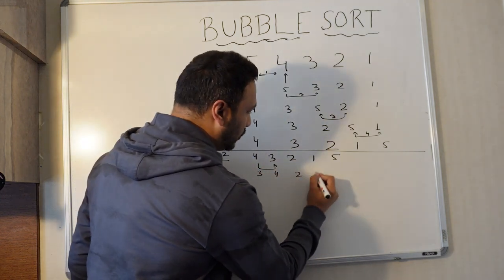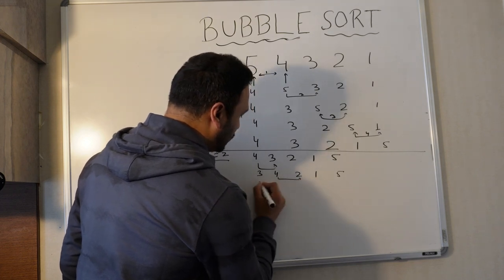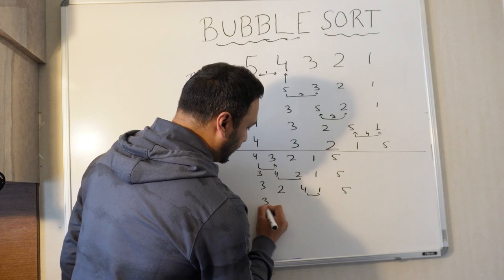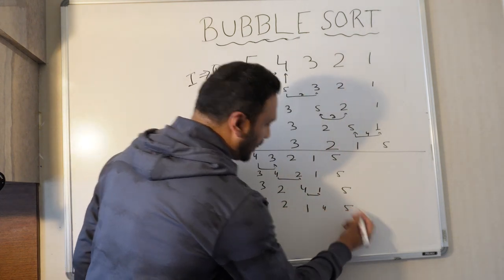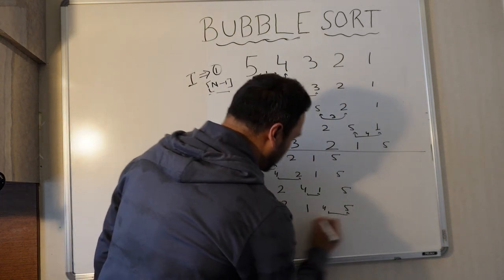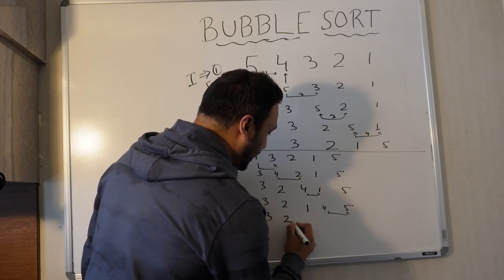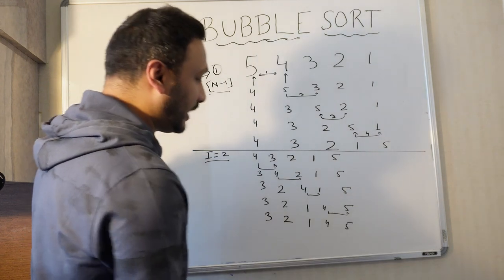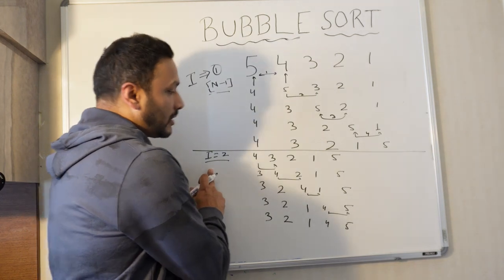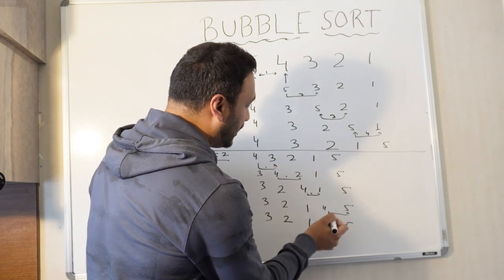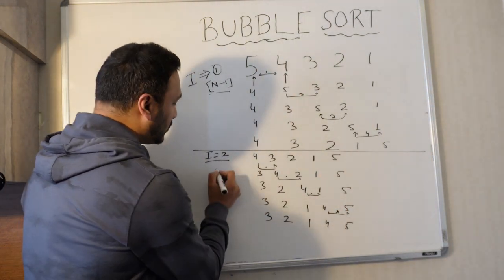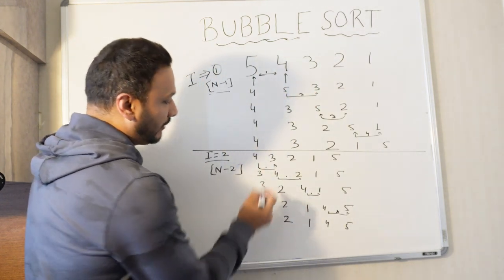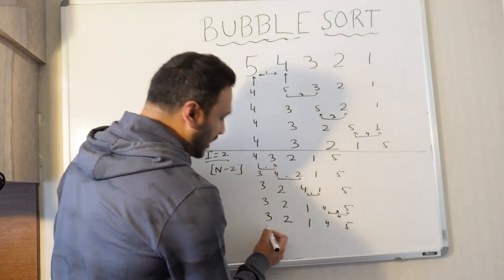Continuing iteration 2: check 4 and 2 — 2 is smaller, swap to get [3, 2, 4, 1, 5]. Check 4 and 1 — swap to get [3, 2, 1, 4, 5]. Then check 4 and 5 — no swap needed since 5 is not smaller than 4. In the second iteration we did 3 swaps, which is n minus 2 times. So 5 minus 2 equals 3 swaps. Final output after iteration 2: [3, 2, 1, 4, 5].